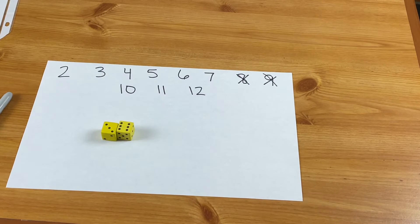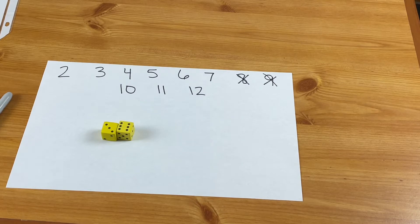The first to knock out all their numbers wins. If you roll a number that you've already crossed out, then you lose that turn if you're playing with a partner, otherwise you just keep going.